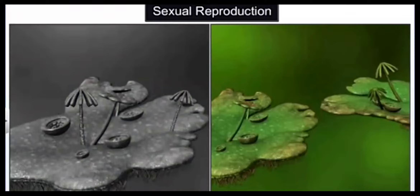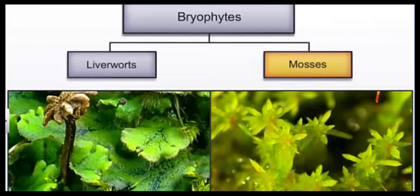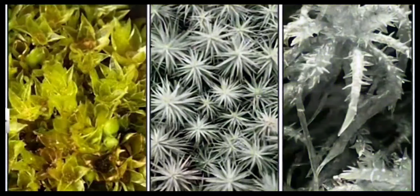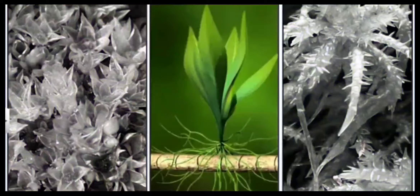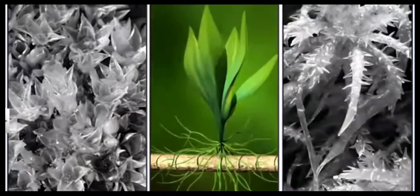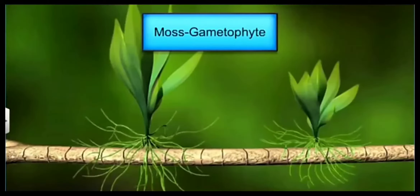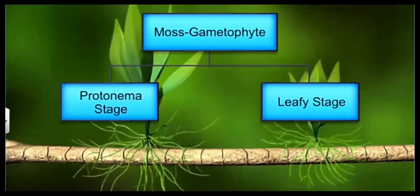In sexual reproduction, there are antheridia and archegonia which may be present on the same or different thallus. Next comes the mosses. Mosses may be Sphagnum, Funaria, or Polytrichum. Mosses are the advanced bryophytes where false differentiation is there in terms of roots, leaves, and small stem.